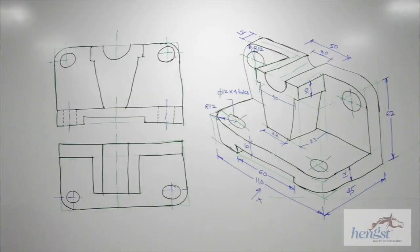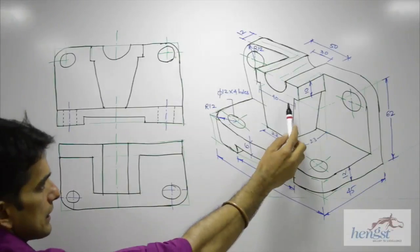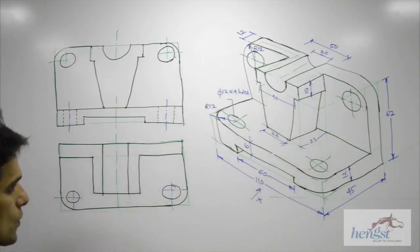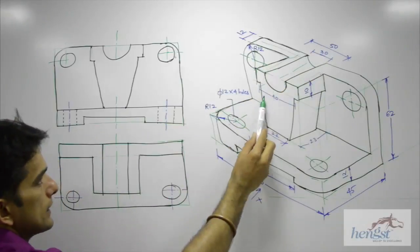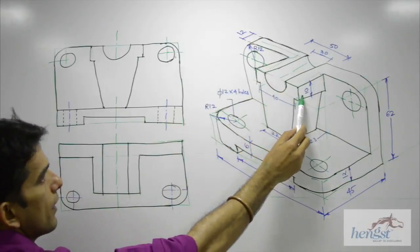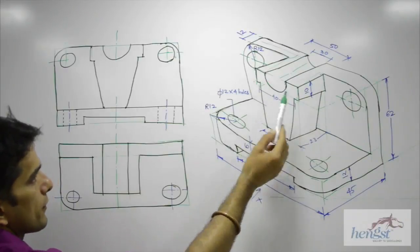After that, now we need to draw a dotted line. When you see from the top, you won't be able to see this line, the one which is going inside. This is 50 and this is 40. So we have this part, 5 from both sides. So that we need to draw dotted.